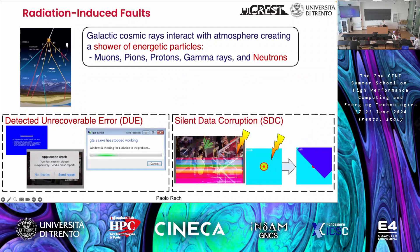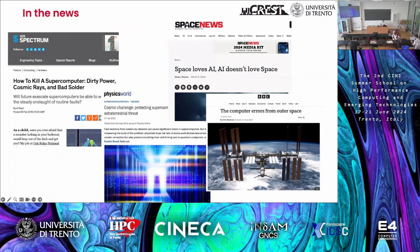Or you can have a silent data corruption — your application finishes, it provides you with an output, but the output is wrong. That is the problem we need to address. The majority probably never heard of it, but it's actually out in the news, mainly for supercomputers. Reliability is a great issue. One of the best ways to kill a supercomputer is to expose it to radiation, and radiation is a significant problem for any space application.